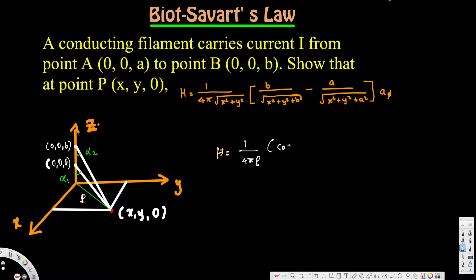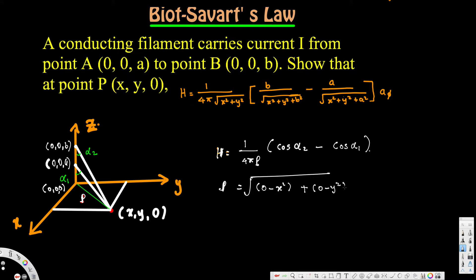Now let's calculate each term individually. Rho can be calculated using the coordinates of P at (x, y, 0) and the origin at (0, 0, 0). Subtracting: square root of (0 minus x) squared plus (0 minus y) squared gives us square root of x squared plus y squared. So rho equals square root of x squared plus y squared.